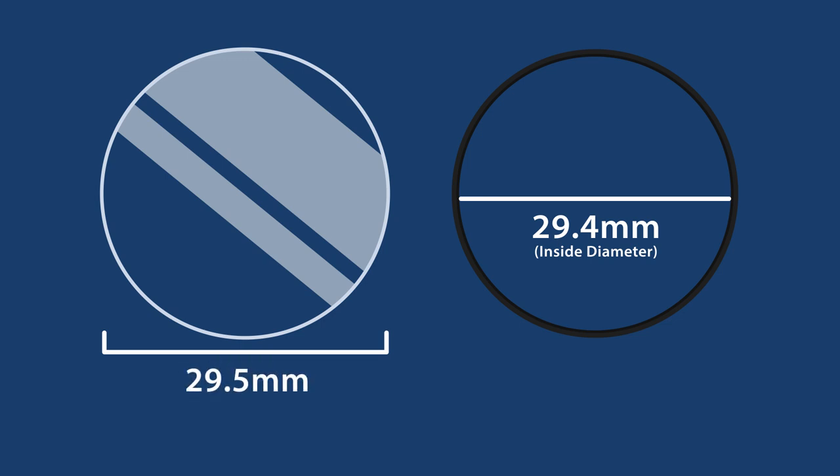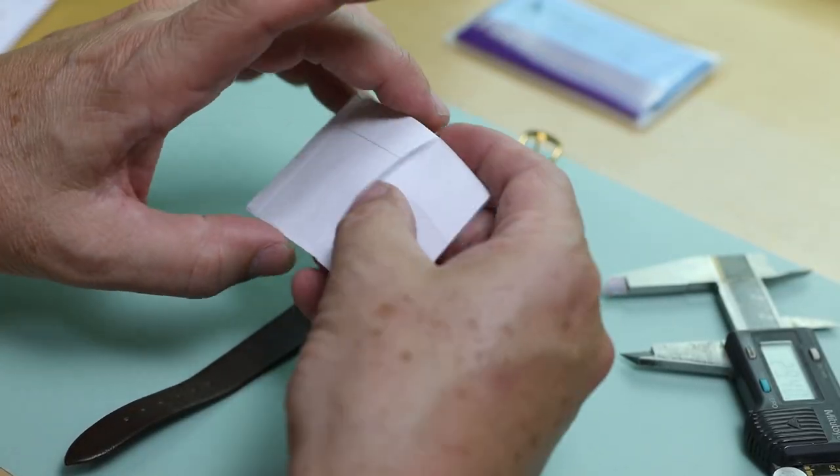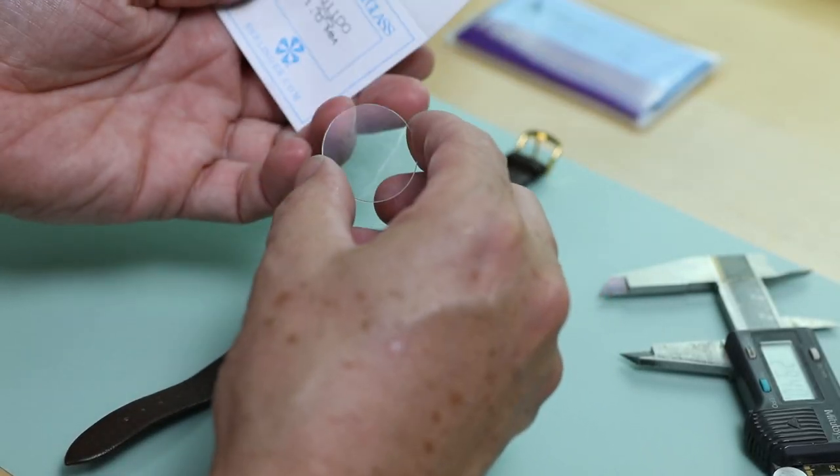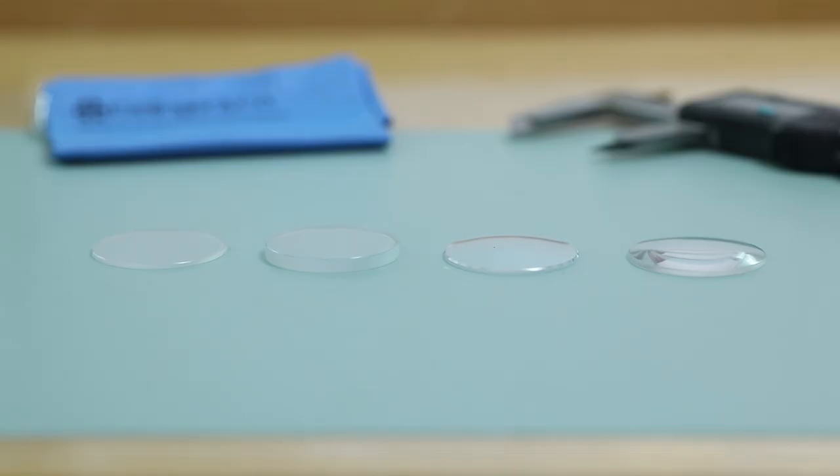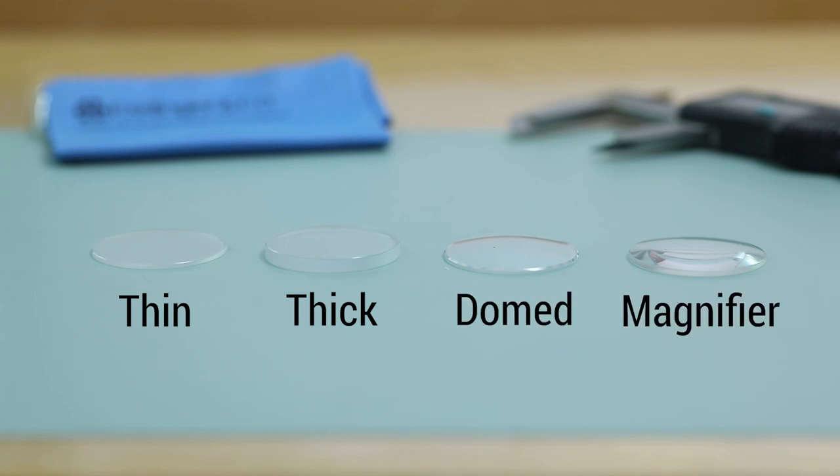It's important to note that round crystals come in a number of different styles. If you have the original crystal, you can easily match up the style. But if the crystal is missing, you can choose from our selection of thin, thick, domed, and magnifier glass crystals.